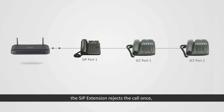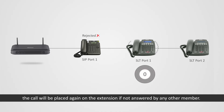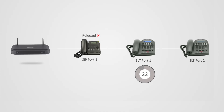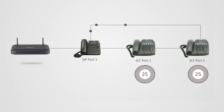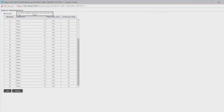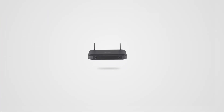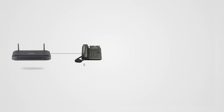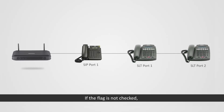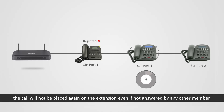If the flag is checked, the SIP extension rejects the call once and the call will be placed again on the extension if not answered by any other member. If the flag is not checked, the SIP extension rejects the call once and the call will not be placed again on the extension even if not answered by any other member.